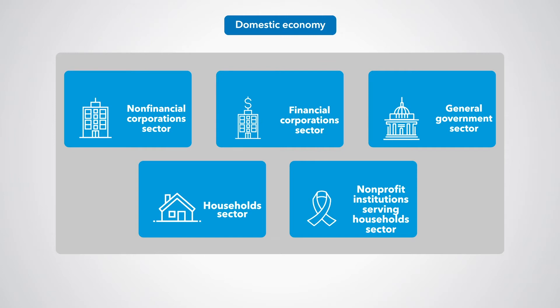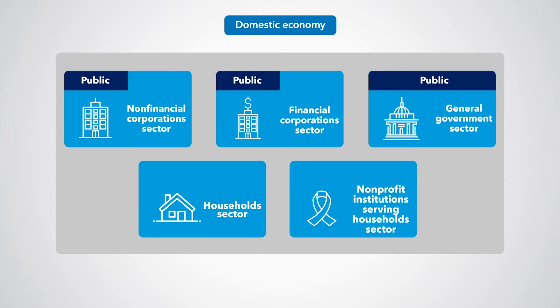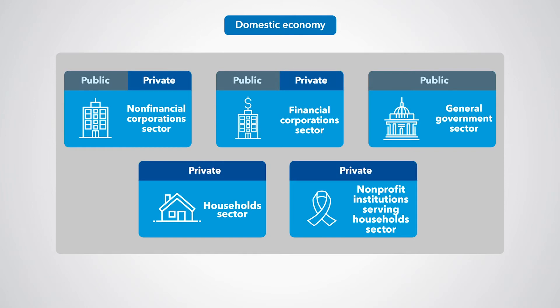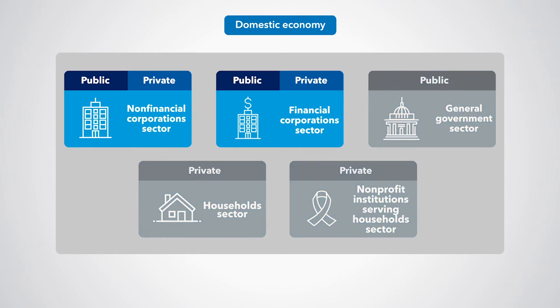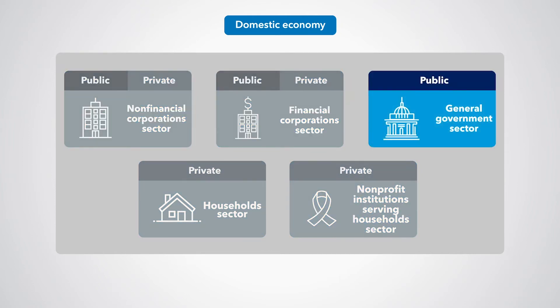We also have a term frequently used when discussing GFS called the public sector. Institutional units that are controlled by the government are called public, and those that are not controlled by the government are called private. The non-financial and financial corporation sectors can be either public or private. The general government sector is by definition controlled by government, and the households and non-profit institutions serving households sectors are not.